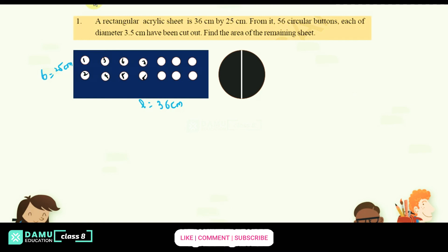Then each of that diameter is, let's take button is like this. So each diameter is 3.5 cm. Then find the remaining sheet, what is the remaining sheet area from rectangle, that is what we have to calculate.